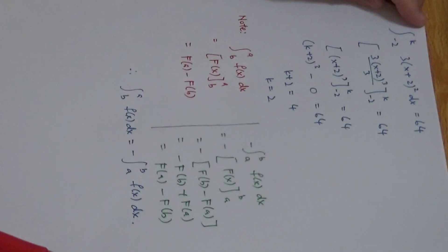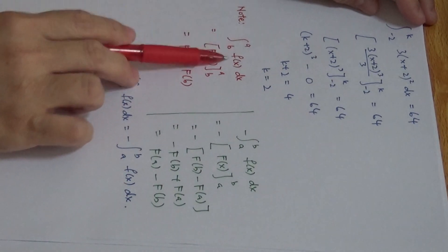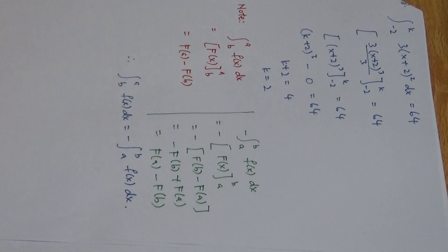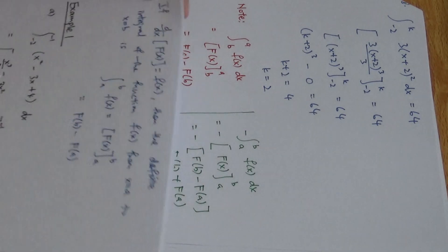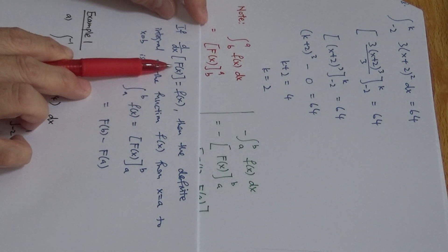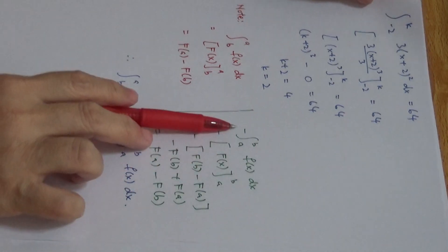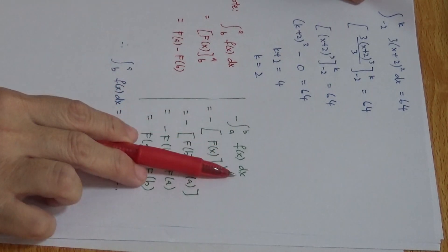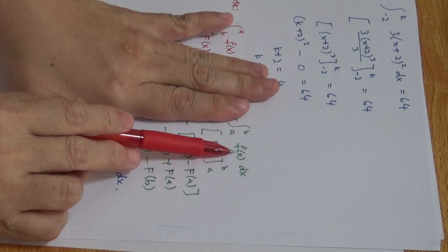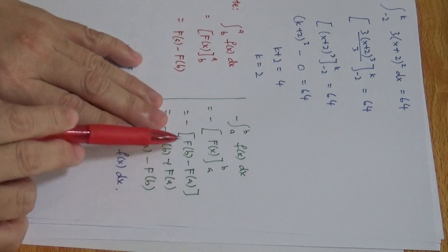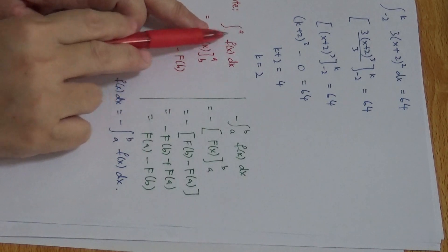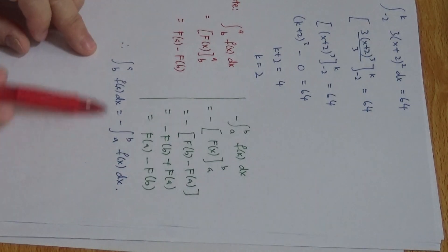Now let's look at one concept before you do your homework. When we integrate from b to a of f(x) dx, it's F(x) from a to b, which gives F(a) minus F(b). Now if I put a negative outside and flip the two limits, when I integrate from a to b and bring the negative in, it still becomes F(a) minus F(b). So these two expressions are equivalent — integrating from A to B equals the negative of integrating from B to A. This will help you in some of the questions in Exercise 17.1.